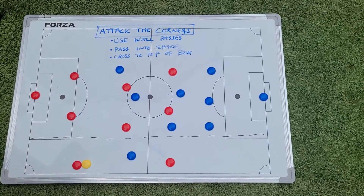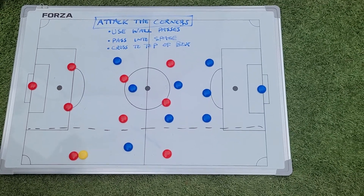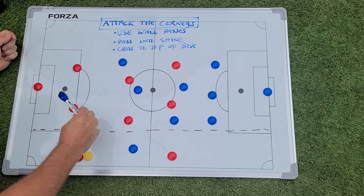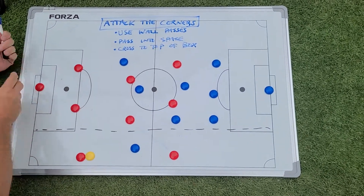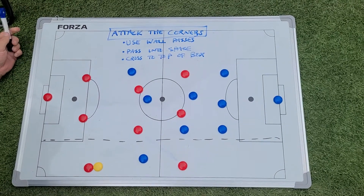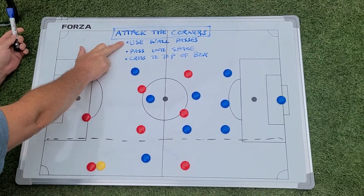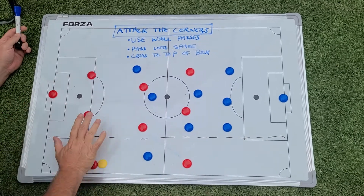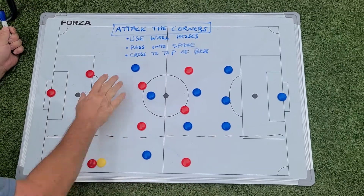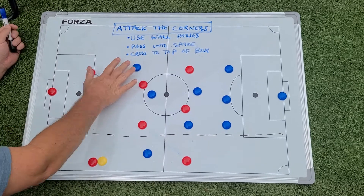Welcome to the next installment of our SoccerIQ series. This one we're going to focus on attacking, and it's all about attacking the corners. I'm going to talk about using wall passes and passing into space to advance the ball into the corner, and then once we get into the corner, crossing to the top of the box for a shot on goal.